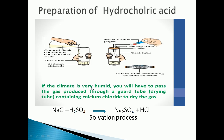If the climate is very humid, you will have to pass the gas produced through a drying tube. This drying tube contains calcium chloride which will dry the gas released through the delivery tube. This is the preparation of hydrochloric acid - a very important process. The other name for the preparation of hydrochloric acid is the solvation process. If they ask you to write about the solvation process, you have to write about the preparation of hydrochloric acid, with a diagram explaining the process.